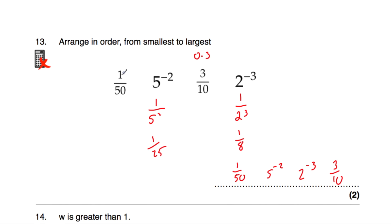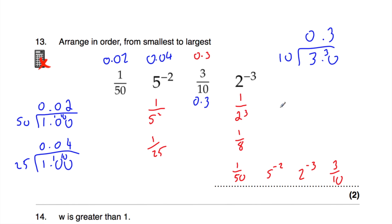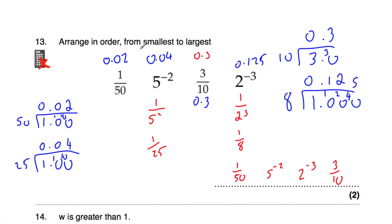Another approach is to convert each to a decimal by dividing numerator by denominator. 1 ÷ 50 = 0.02. 1 ÷ 25 = 0.04. 3 ÷ 10 = 0.3. 1 ÷ 8 = 0.125. So from smallest to largest: 0.02, 0.04, 0.125, 0.3 — confirming the same order.